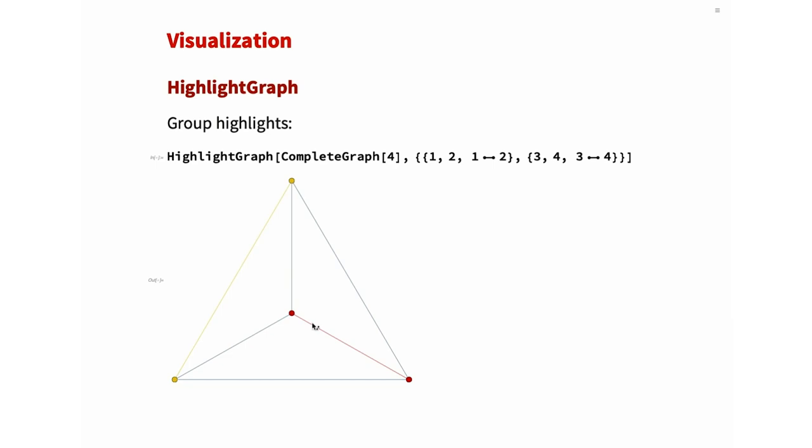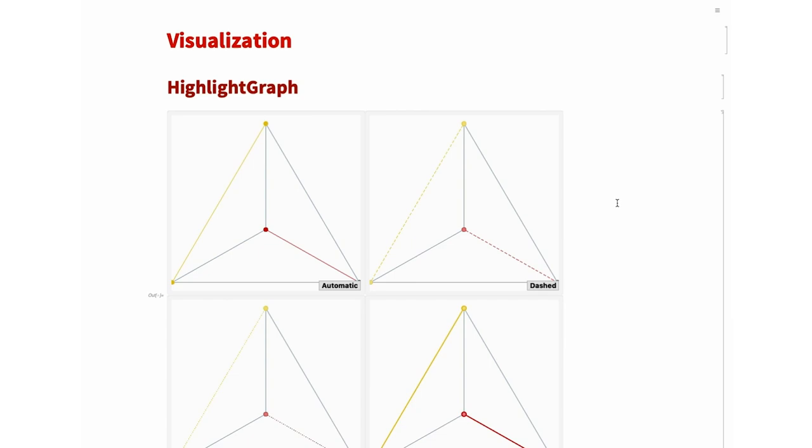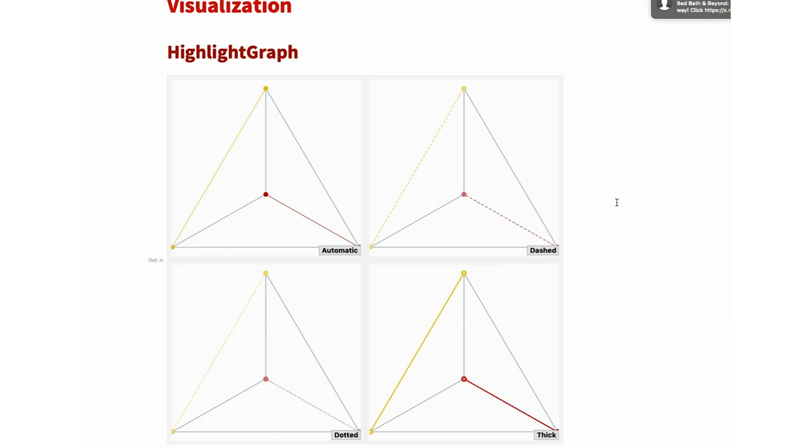So we went further in the new version so that it colors differently, and also maintains specified style. And this is the new behavior we implemented in the new version. Now you can see, not just color, also it follows the default highlight style. And next slide, we'll show you the gallery of highlight graph in case of multi groups. So all the styles, like dashed, dotted, thick, are nicely maintained with different colors that depend on the group you specified.